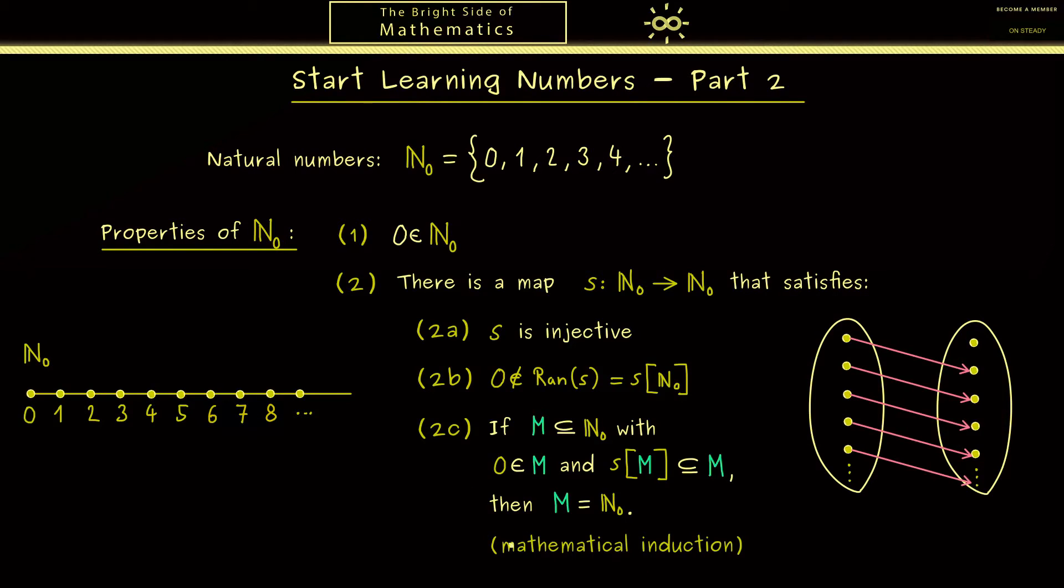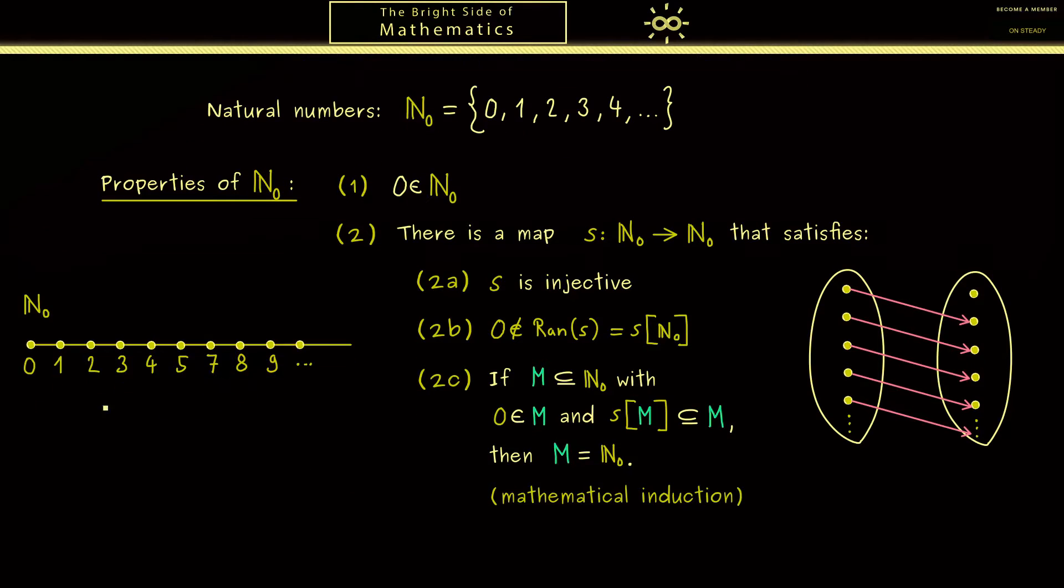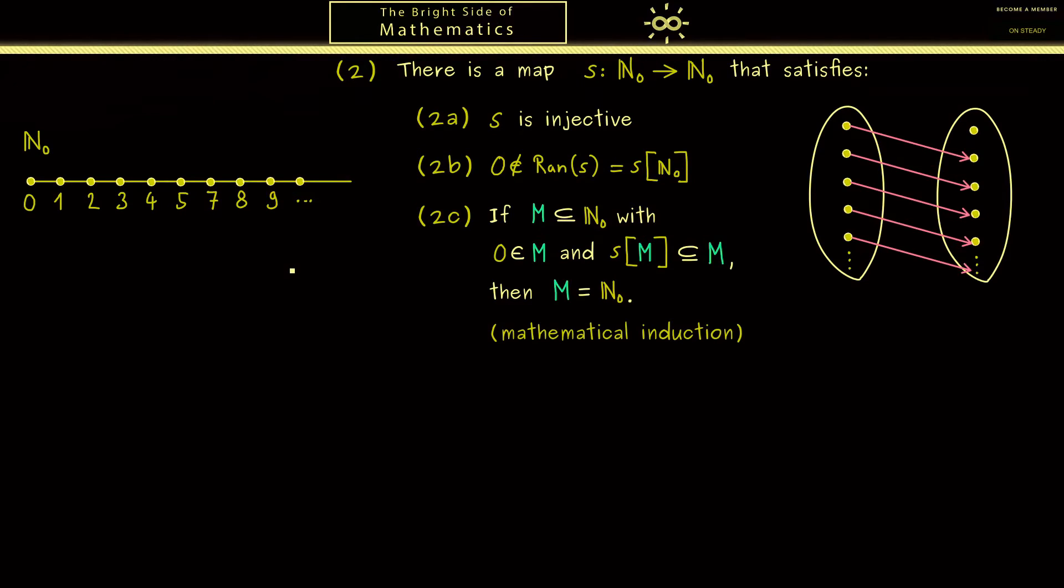Of course later I will show you how we can use this to prove a lot of things. However, before we do that, we first want to calculate with the natural numbers as we already know it. The first calculation one learns is given by the addition. This operation of adding two numbers you can see as a map from the Cartesian product into the natural numbers again. We just combine two natural numbers, and from now on let's use the variables m and n for natural numbers.